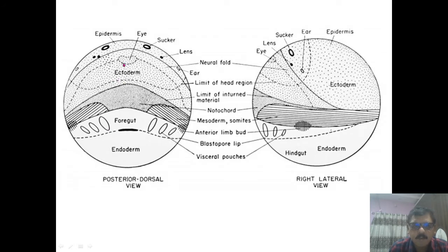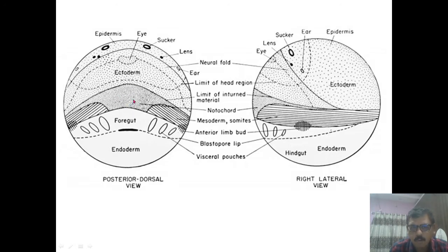The ectodermal area gives rise to the wall. This area gives rise to the lenses, then the ear, then the head region. This central area is going to form the notochord. This is the blastopore. This is the anterior limb bud, and these are the mesodermal areas, and this is the endoderm.